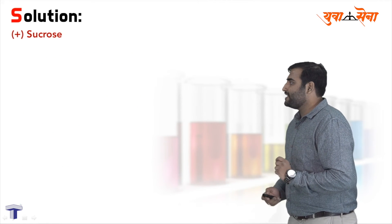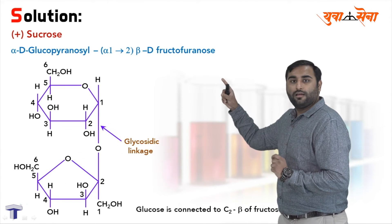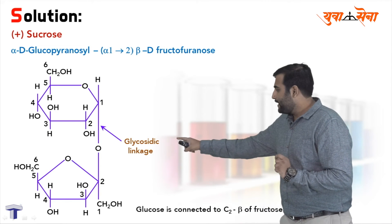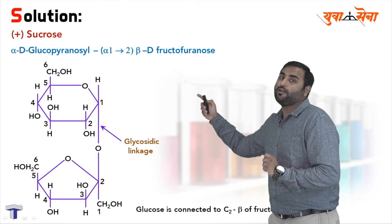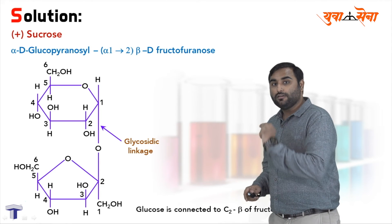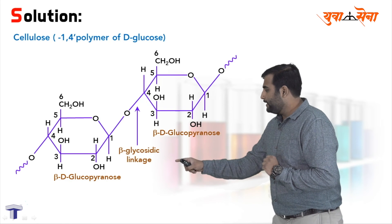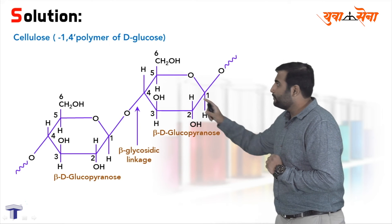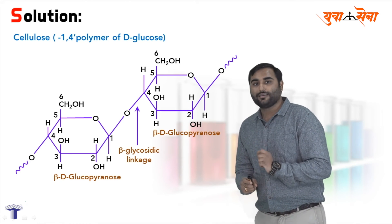Haala ki agar aap sucrose ka structure dekhayenge — jo humara sahih jawab hai — yeh structure bana hai: one glucose structure, another is fructose, aur yahan pe glycosidic linkage hai. So yeh humara sahih jawab hai, because sucrose glucose aur fructose ka bana hai. Statement wrong kya tha ki dono structure glucose ke bane hain. Now let us see cellulose — cellulose is also made up of beta-D-glucopyranose and beta-D-glucopyranose, attached with carbon 1 and carbon 4. So issse haame yeh patha chalta hai ki sahih answer tha sucrose.